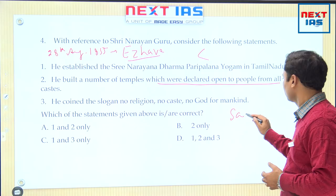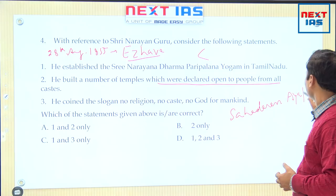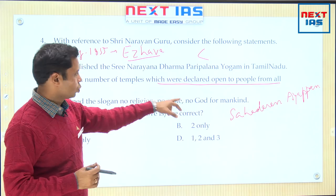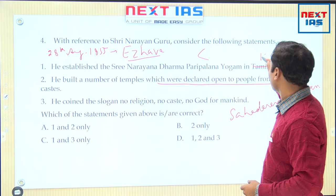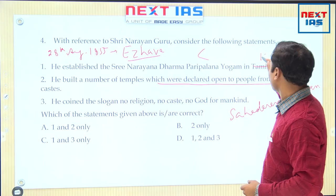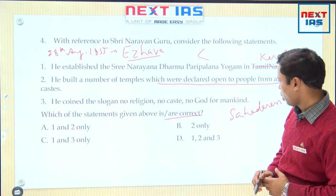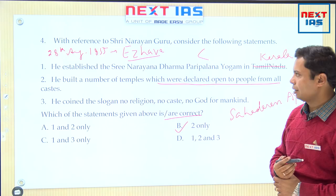The slogan 'no religion, no caste, no God' was added by one of his disciples, Sahodaran Ayyappan. So the first statement — that he established the Sri Narayan Dharma Paripalan Yogam in Tamil Nadu — is also not correct because it was opened in Kerala. He built a number of temples declared open to people from all castes — that is correct. He coined 'no religion, no caste, no God' — that is also wrong, as it was his disciple's slogan. So only statement 2 is correct — answer is B.